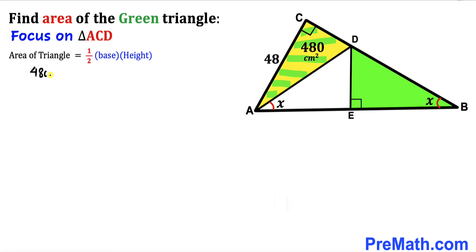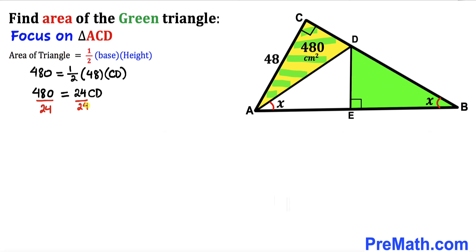So 480 equals one half times 48 times CD. Simplifying, 480 equals 24 times CD. Dividing both sides by 24, our CD length turns out to be 20 cm.